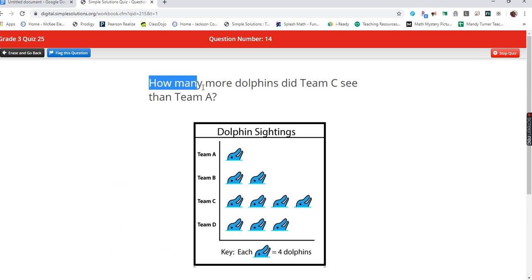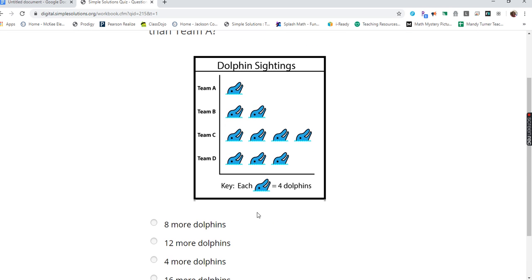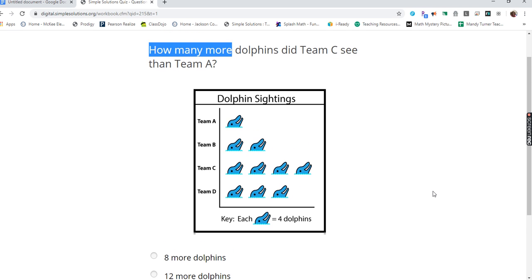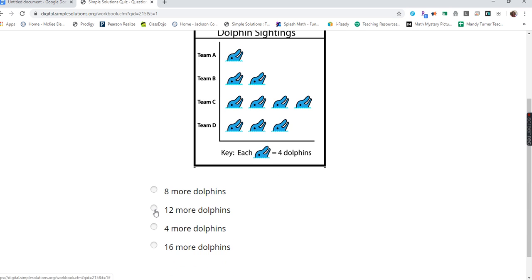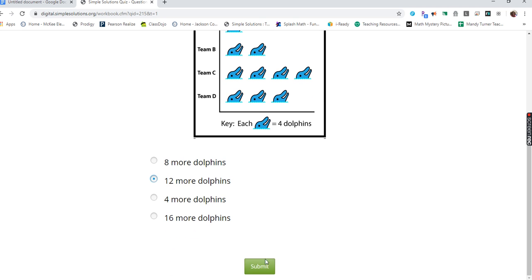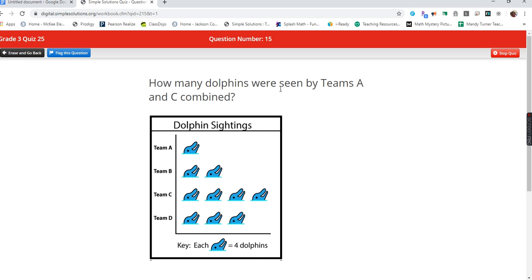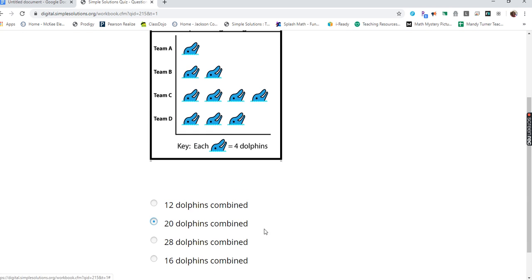How many more dolphins did team C choose than team A? Well, first I always look at my key, and there are four dolphins for each dolphin picture. So team C: this would be 4, 8, 12, 16. And team A had 4, so 16 minus 4 is 12. How many dolphins were seen by A and C combined? 4, 8, 12, 16, 20. Twenty dolphins.